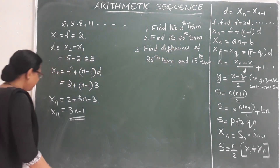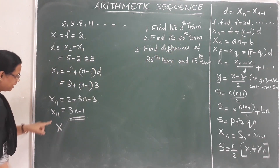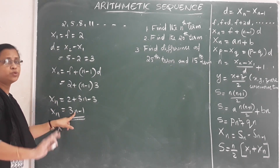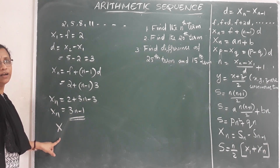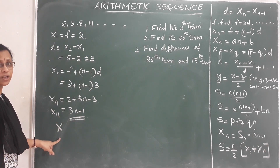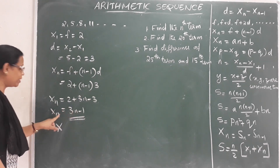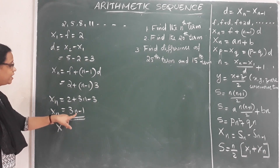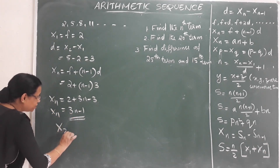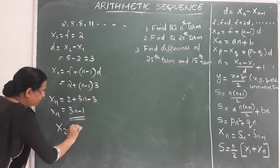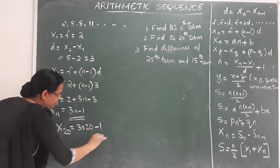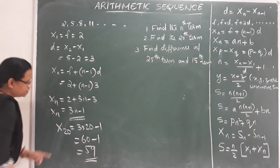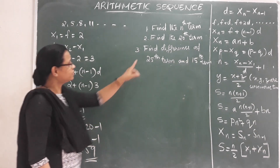Now let's find the 20th term. To find any specific term, replace n with that number. For the 20th term, substitute n equals 20: x20 equals 3 into 20 minus 1, that is 60 minus 1, equals 59. So the 20th term is 59.